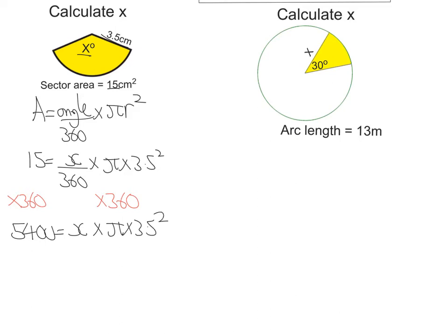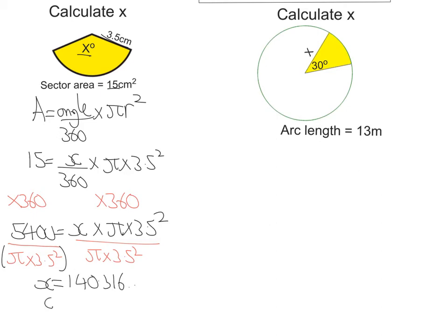Now, to get x on its own, I need to move the pi and the 3.5 squared. They are multiplying x, so I do the opposite — divide both sides by them. So I do 5,400 divided by (pi times 3.5 squared), and I get x equals 140.316... So to three significant figures, it would be 140 degrees.